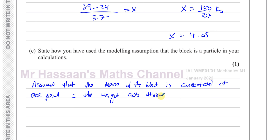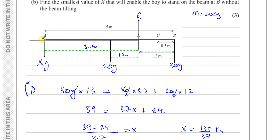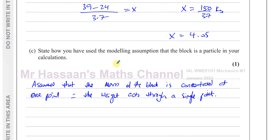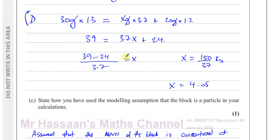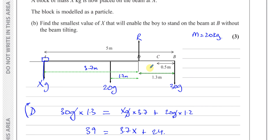We assumed that the mass of the block is concentrated at one point, and therefore the weight acts through a single point on the block. The block is physically a block, but we took the weight to act through one point within it. That's how we use this modelling assumption. This is a common question in these types of problems, so it's important to understand what a particle is and what assumptions we make when using that model.